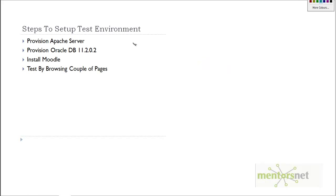Here is a summary of setting up our test environment: we provision an Apache server from AWS, then provision an Oracle Database 11.2.0.2 from AWS, then install our application Moodle on these two servers. We will then do a test to verify things are working by browsing a couple of pages and understanding the functionality of Moodle.